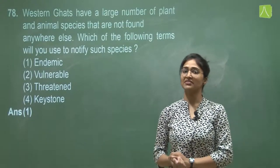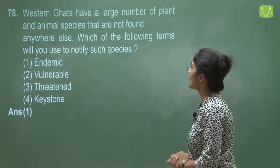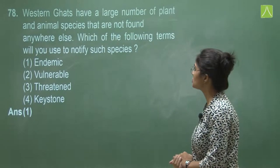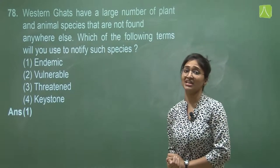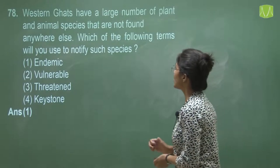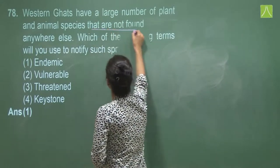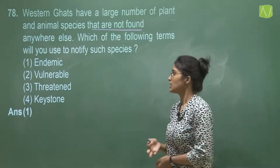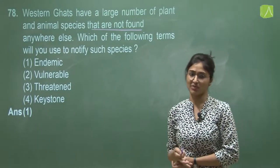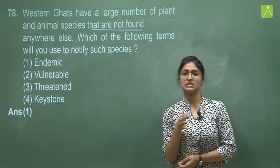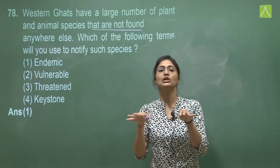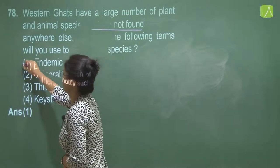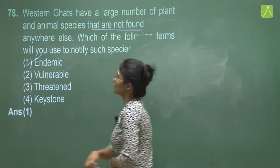Question 78 states that the Western Ghats have a large number of plant and animal species not found anywhere else. This describes a species confined to a single area, which is the definition of endemism. So the answer here is endemic.